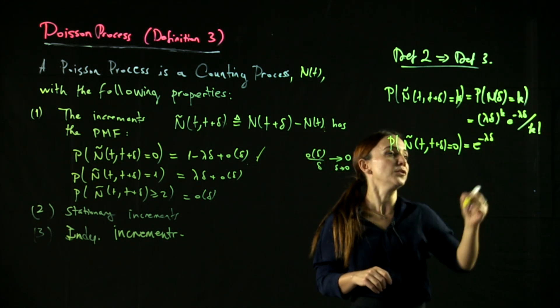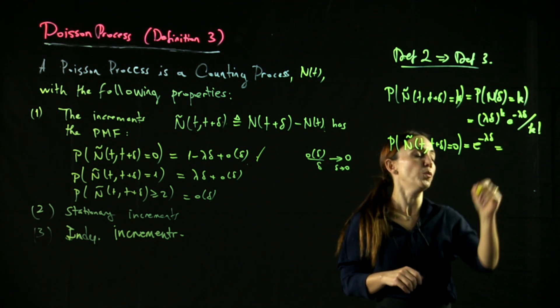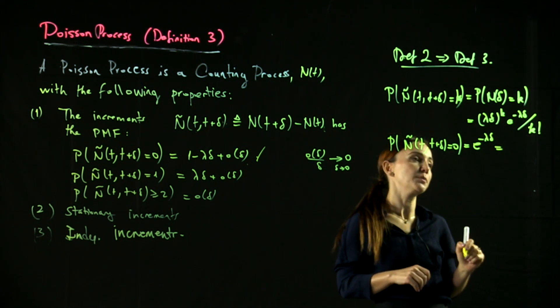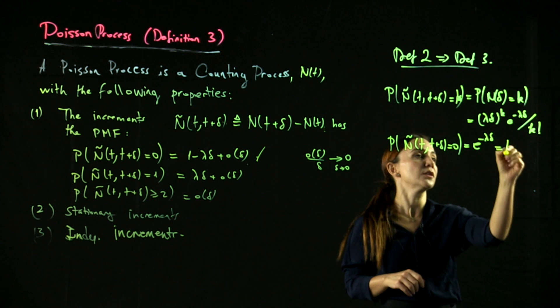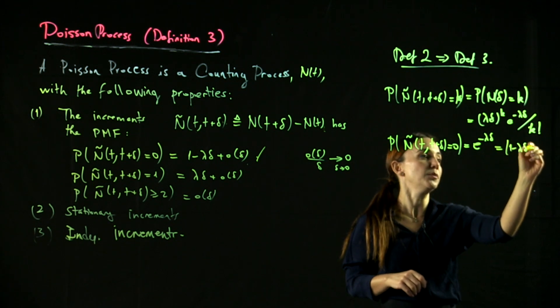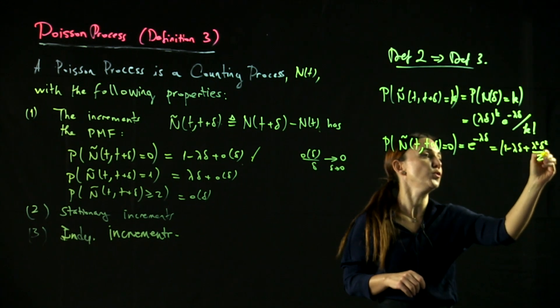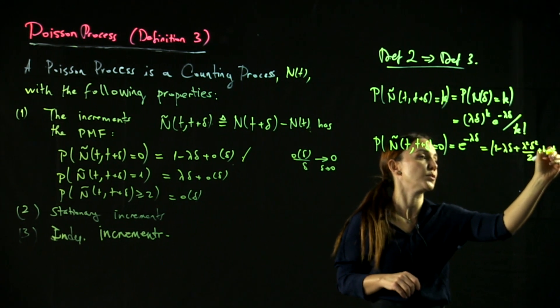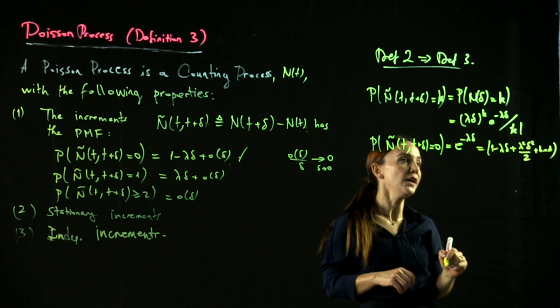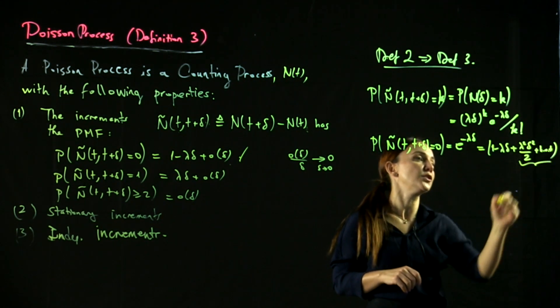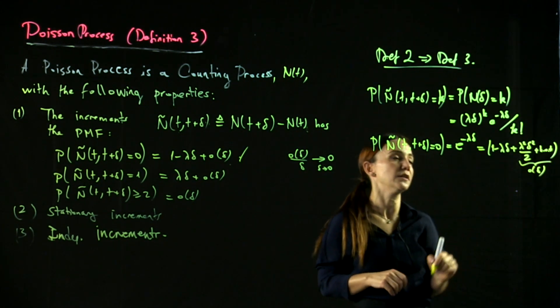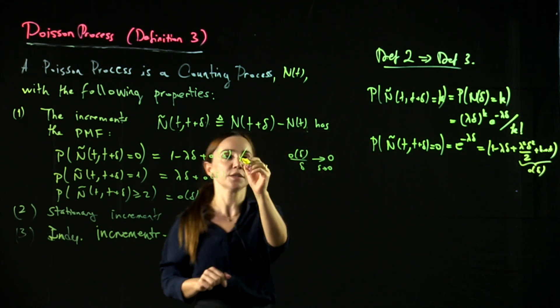Because e to the minus lambda delta, when you open it up in a Taylor series expansion, it is 1 minus lambda delta plus lambda squared delta squared over 2 plus higher order terms. And clearly, these terms are little o of delta. So the first thing is satisfied.